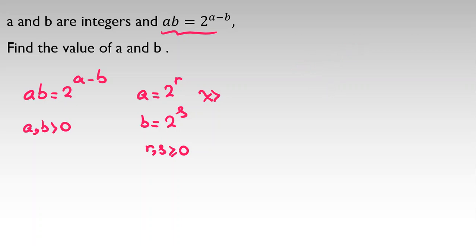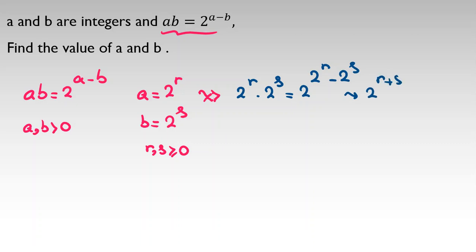Now substituting A with 2 to the R and B with 2 to the S: 2 to the R times 2 to the S equals 2 to the power of 2 to the R minus 2 to the S. By the power rule, the left side becomes 2 to the R plus S, giving us 2 to the R plus S equals 2 to the quantity 2 to the R minus 2 to the S.